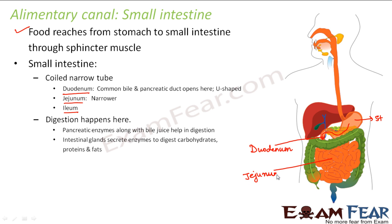The duodenum is that portion where the common bile duct and the pancreatic duct open. It is U-shaped and is the uppermost part of the small intestine — the place where both the bile duct and the pancreatic duct open.